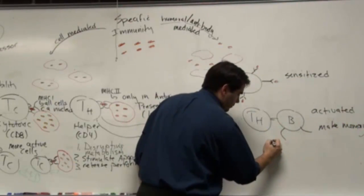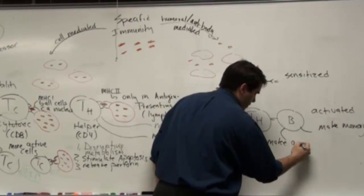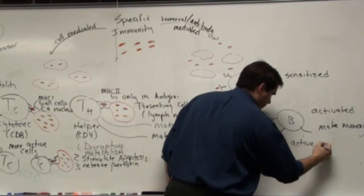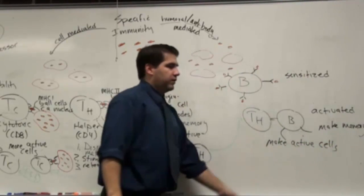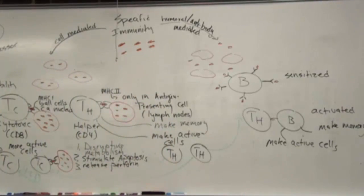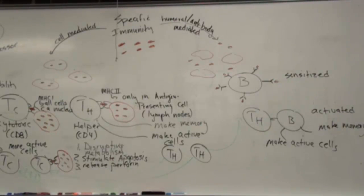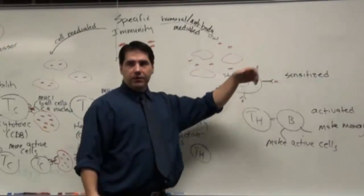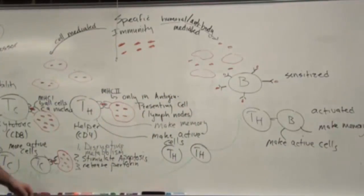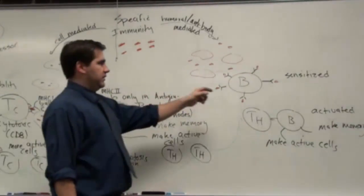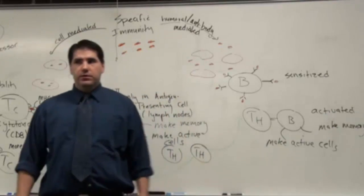And now this guy is going to make memory. And he's also going to make active cells. And these active cells are going to be churning out antibodies at amazing amounts, trillions per second, at least billions per second. Billions and billions of antibodies. And those antibodies are going to trap even more bacteria. They're going to surround that bacteria. And so you basically have three different things attacking at that point because you've got a widespread infection.